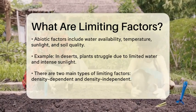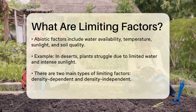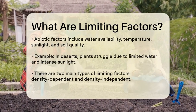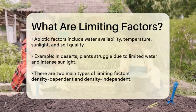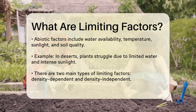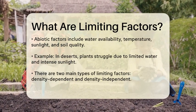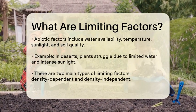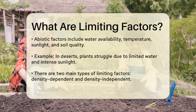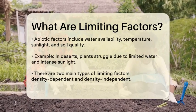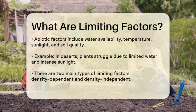On the other hand, abiotic limiting factors are non-living elements that can affect populations. These include water availability, temperature, sunlight, and soil quality. In a desert ecosystem, for instance, plants are often limited by the scarcity of water and the intensity of sunlight.